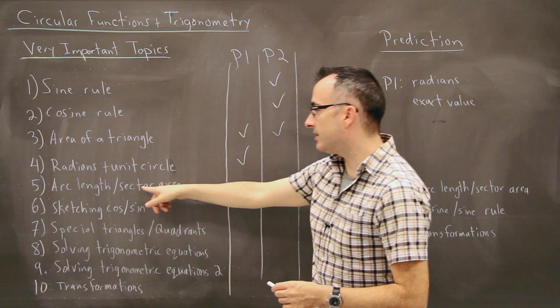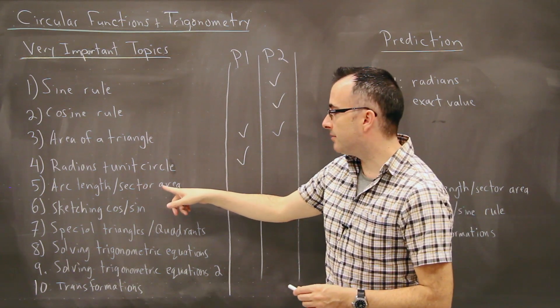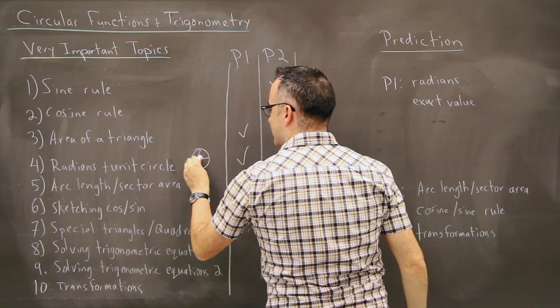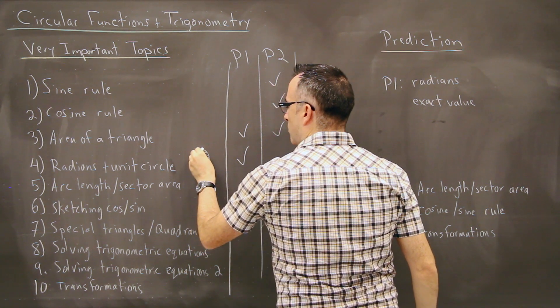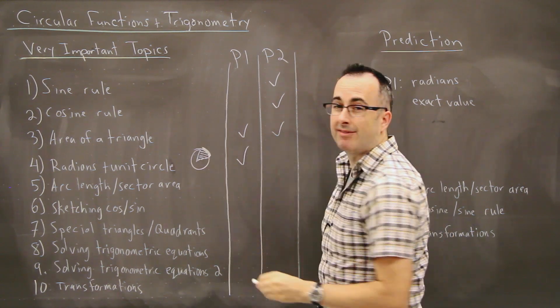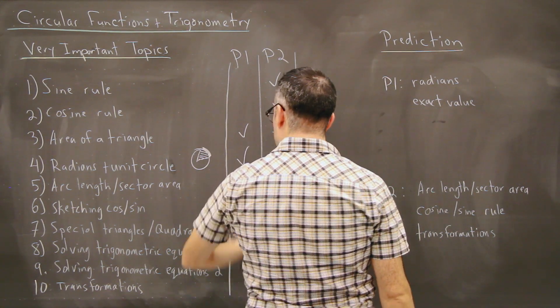Now we have something called arc length and sector area. This is something that, if you're actually looking at a piece of a circle like this right here, and it's in radians, this angle, you might want to know what's this length of this arc, or you might want to know what's the area of that whole thing. And that is a topic that's mostly done in paper two.